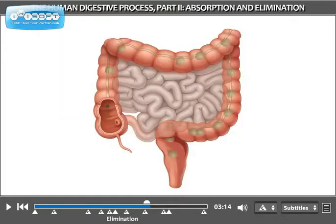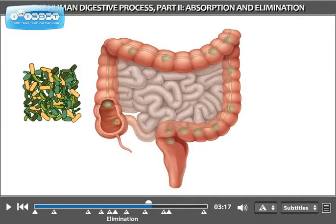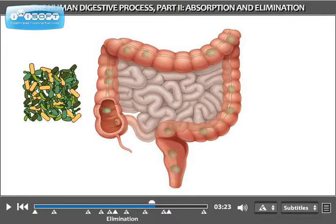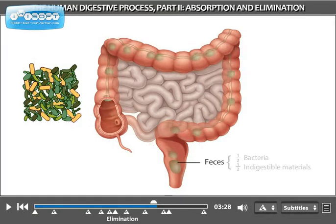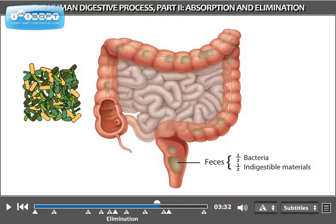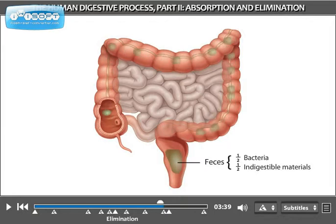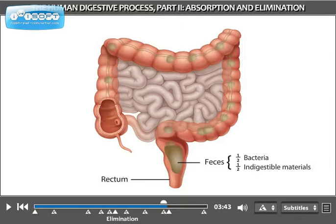Huge colonies of bacteria live in the colon. The bacteria live off the undigested materials that end up in the colon and also release important metabolic byproducts, such as vitamin K and biotin. About half of the feces that we excrete each day is made up of bacteria, and the rest is mostly indigestible materials, such as cellulose from the cell walls of plant matter and other types of fiber. The rectum serves as a storage compartment for the feces before they are released from the body by defecation.